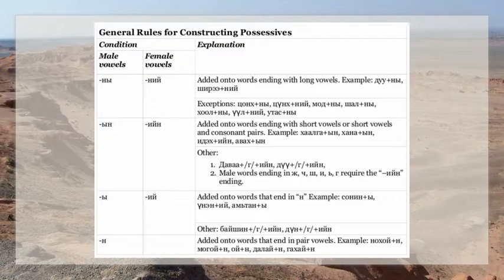The rules for how to construct the possessives can be thought of as spelling rules. As you learn Mongolian and your pronunciation improves, you will find that many of the rules are just a natural result of the most expedient and comfortable way to form the sounds in your mouth and vocal cords, rather than an evil plot by linguists to make learning Mongolian even more difficult. There are patterns.